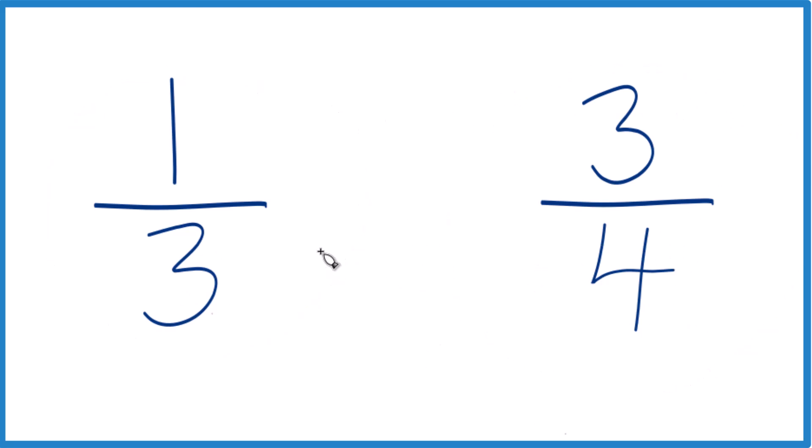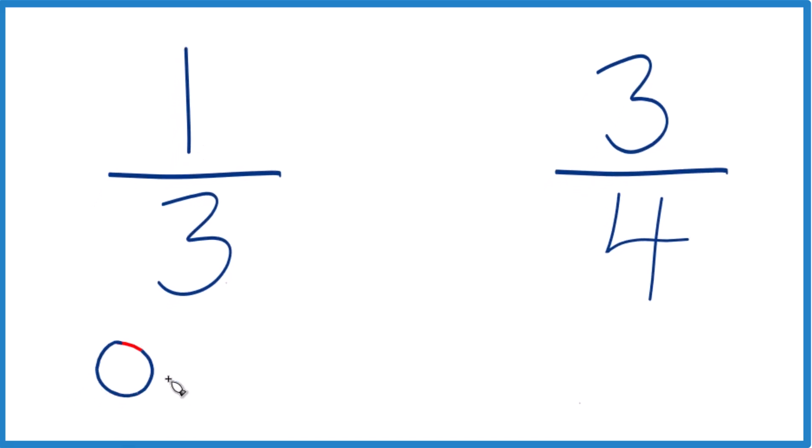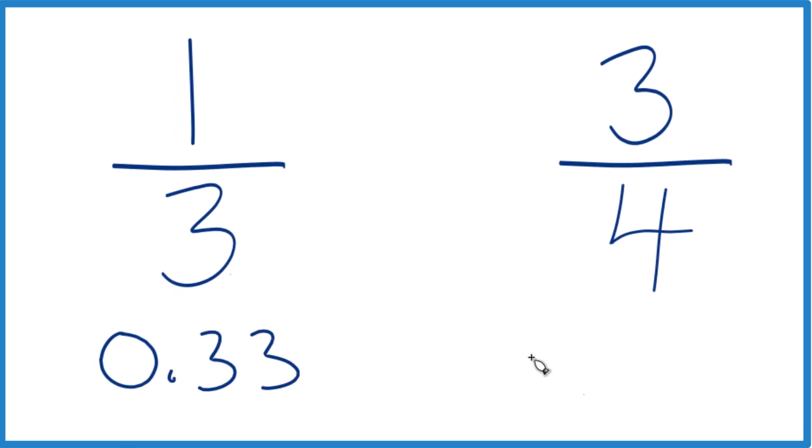You could just, on a calculator, divide one by three, you'd get 0.33, and the three just keeps going. Three divided by four is 0.75. So you can see this three-fourths of a cup here, it's quite a bit bigger than one-third.